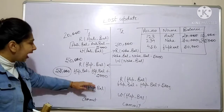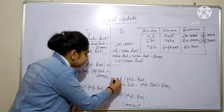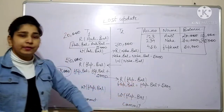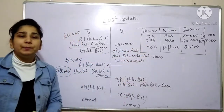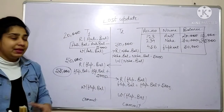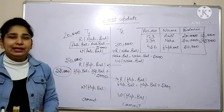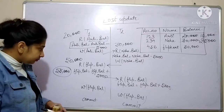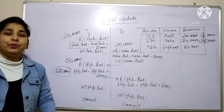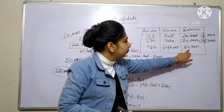Before I could do the update operation in the database, the timer ran out and I switched to transaction T2. T2 also wants to transfer 5,000 rupees from Neha's account to Flipkart's account. These transactions are independent, running in isolation with no effect on each other. So T2 reads Flipkart's balance from the database, which is still 50,000.